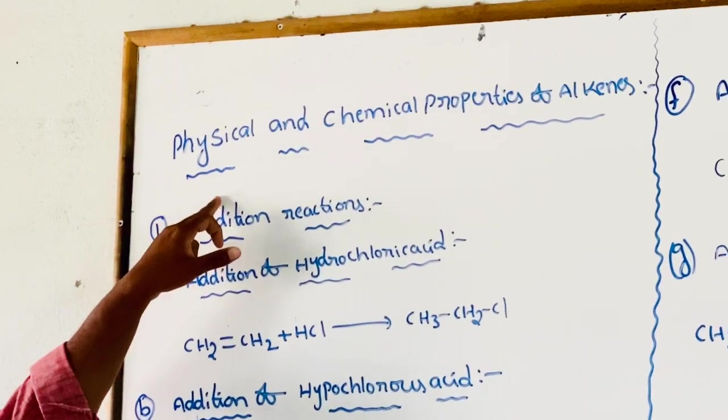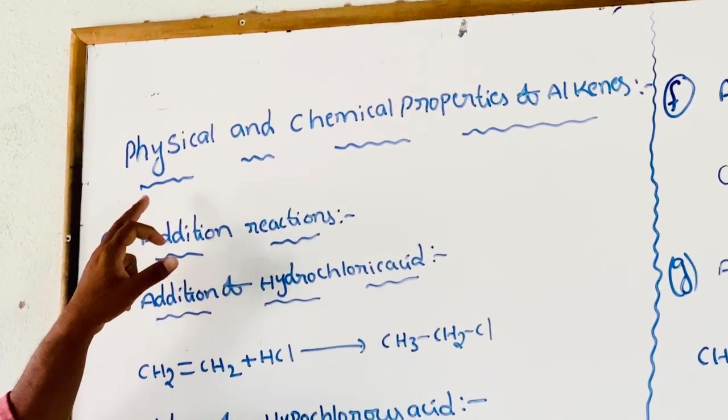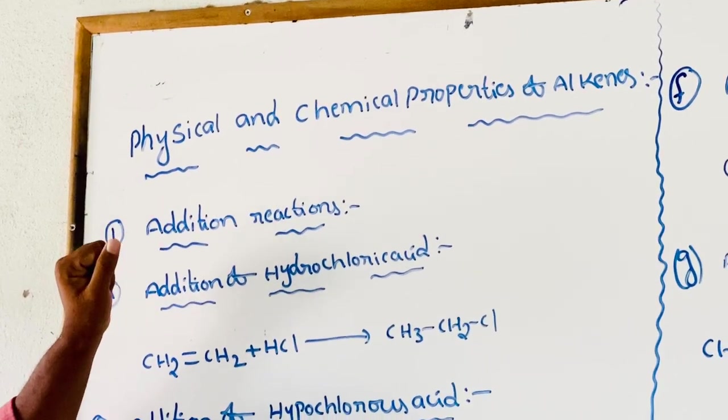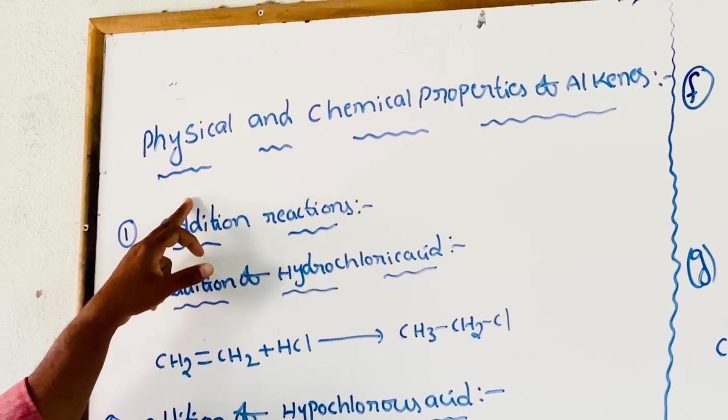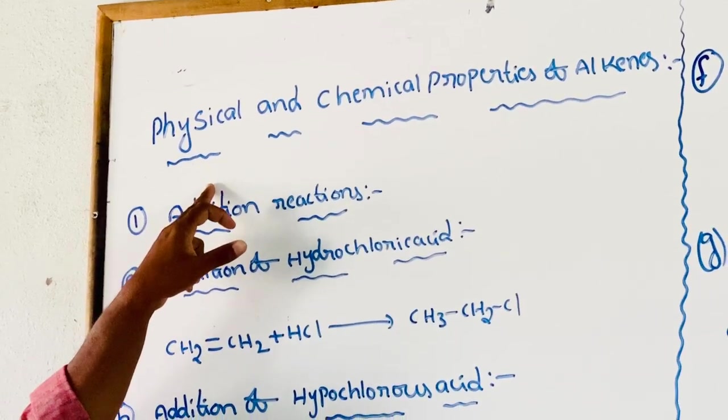Physical Properties. Alkenes are colorless, odorless liquids. The first four members of alkenes are gaseous.